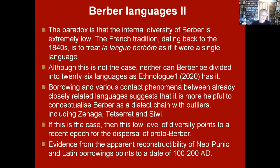Given this vast geographical dispersal, the internal diversity of Berber is extremely low. The French tradition going back to the 1840s treats Berber as if it were a single language, though neither can it really be divided into 26 languages as Ethnologue has it. Borrowing and contact phenomena suggest it is more helpful to conceptualise Berber as a dialect chain with outliers including Zanaga, Tetseret, and Siwi. This low diversity points to a recent epoch for the dispersal of Proto-Berber — supported by reconstructed Neopunic and Latin borrowings pointing to a date of around 100 to 200 AD.